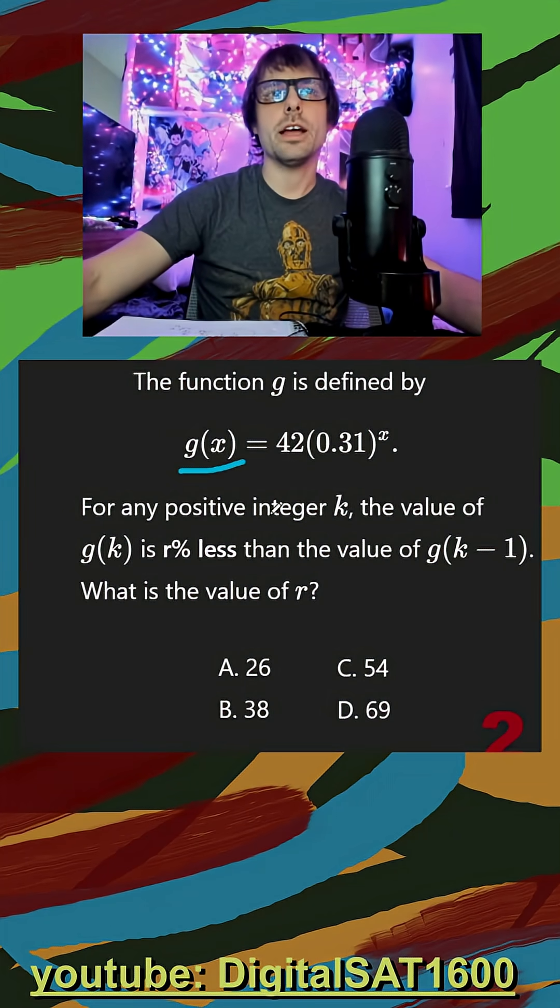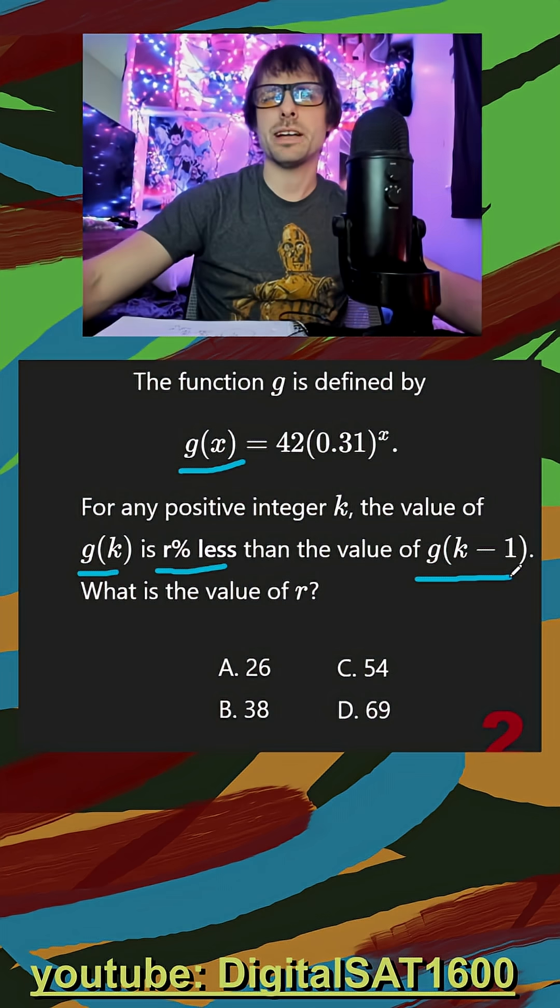I see a g of x function. For any positive integer k, the value of g of k is r% less than the value of g of k minus 1.